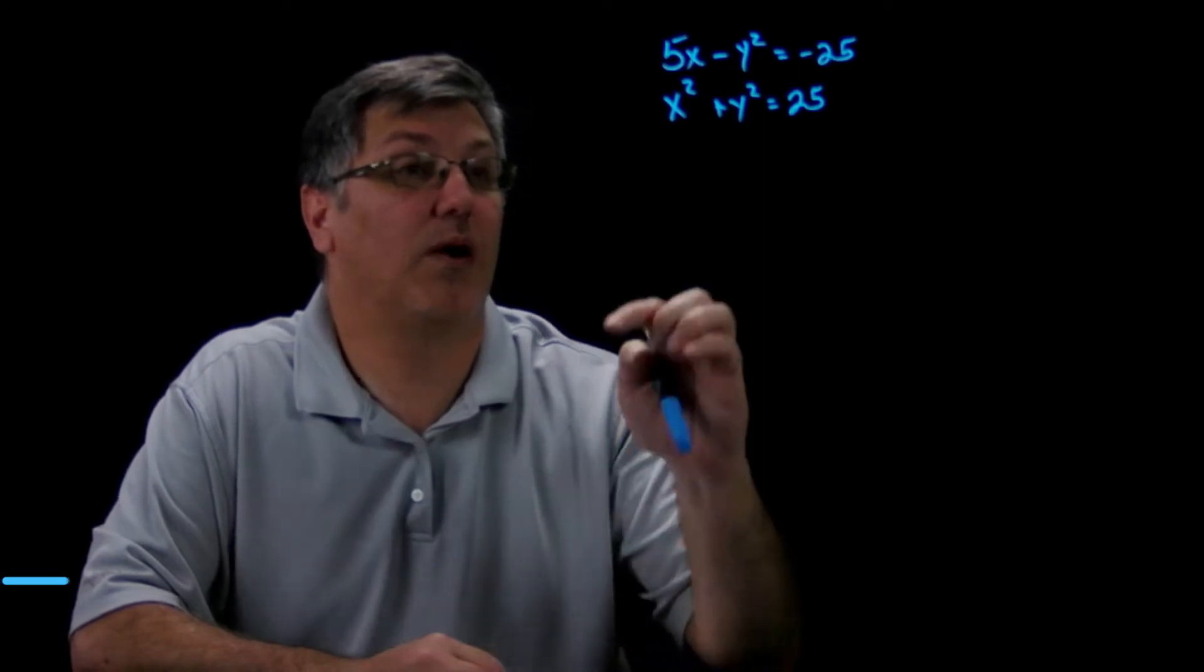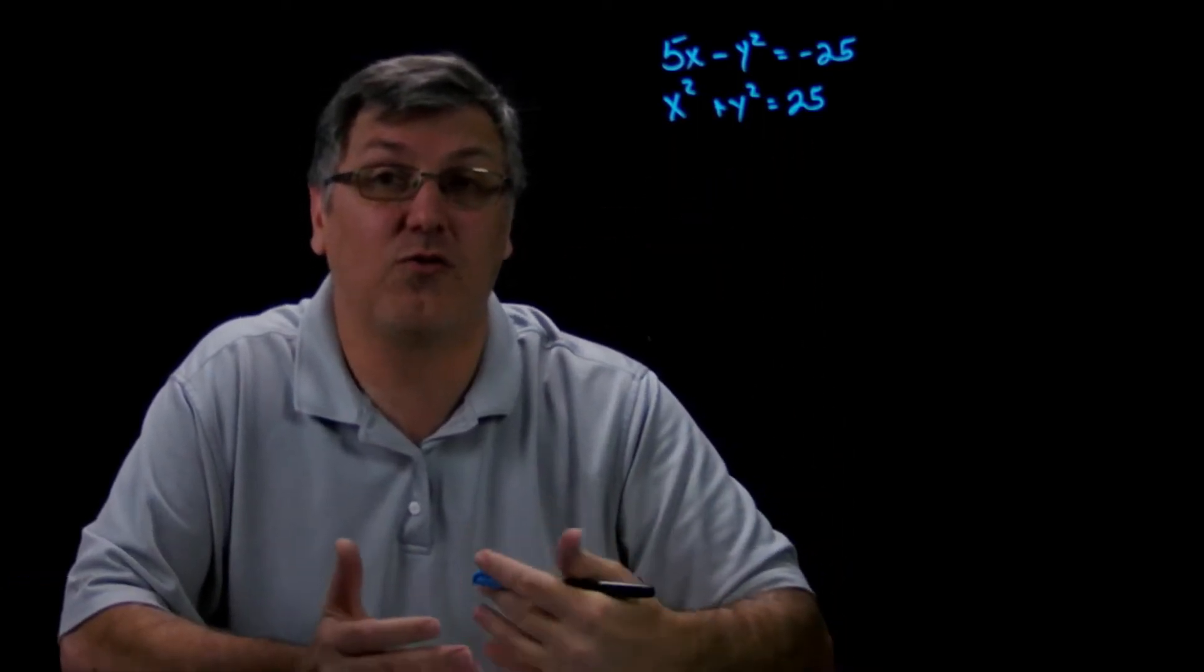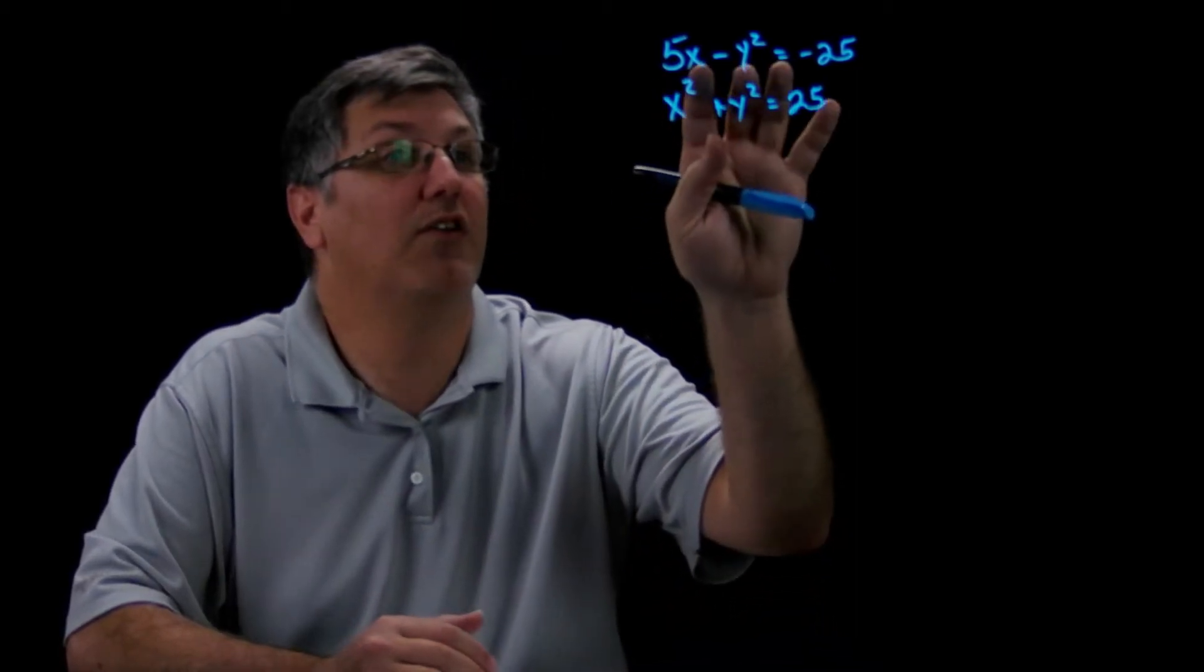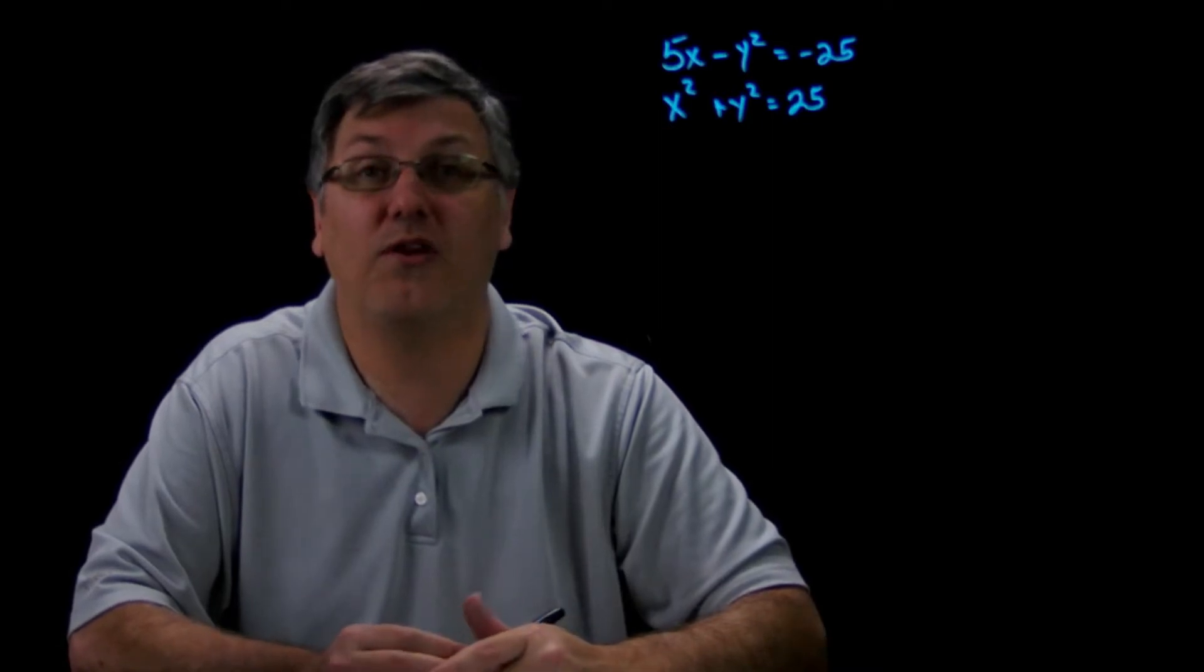Alright, I'm going to work a more complex problem. In this problem we have a circle, x squared plus y squared equals 25. That's a circle centered at the origin (0,0) with a radius of 5. And then we have another parabola here: 5x minus y squared equals 25.